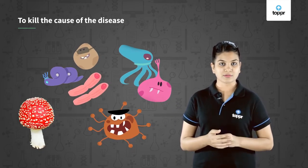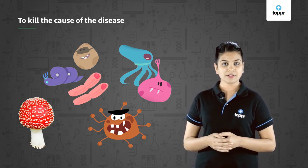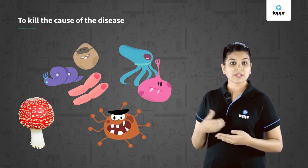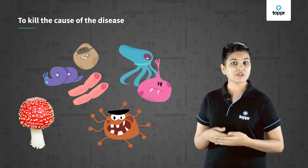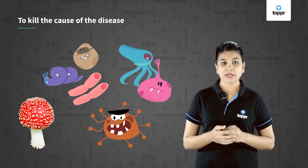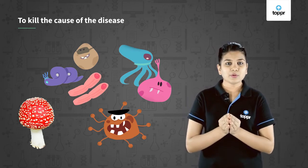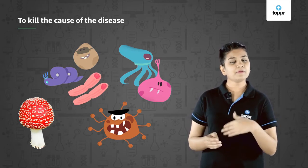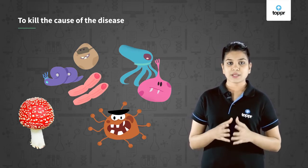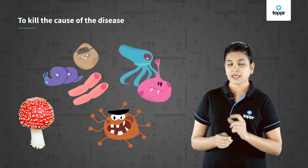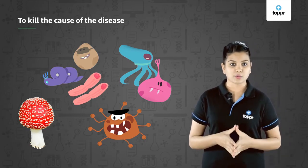We can use medicines to kill these microbes. As we have learned, microbes are divided into various categories such as viruses, bacteria, fungi, protozoa, etc. These categories of microbes possess different biochemical pathways, and these biochemical pathways are different for each category. So the drug that affects one category is not going to work against another one, mostly.